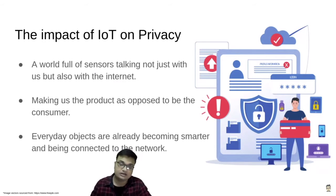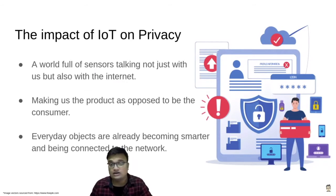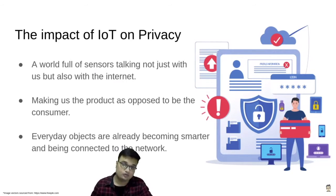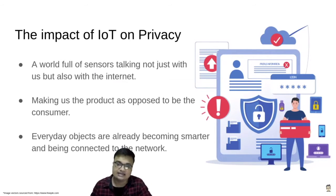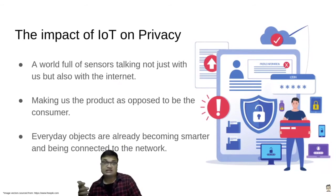Everyday objects are already becoming smarter and being connected to the internet — the global network. Our computing is slowly diffusing out into our environment. From what we do online to what we do offline, everything can now be tracked, analyzed, and packaged into a bundle, ready to be consumed by the biggest fish in the open market for purposes that might not be completely known to us — mostly, they are unknown to us. Do we really have a say? Do we really know what's going to happen with our data?